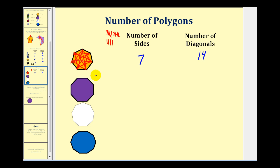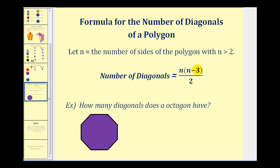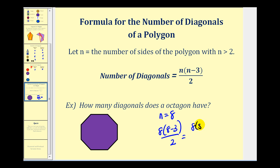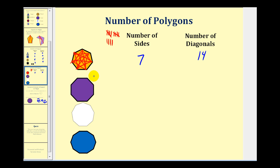It is a fairly challenging formula to develop from this pattern, but the formula is n times the quantity (n minus 3) divided by 2, where n is the number of sides. For an octagon with eight sides, n equals 8, so the number of diagonals is 8 times (8 minus 3) divided by 2, which is 8 times 5 equals 40, divided by 2 — that's twenty diagonals. You may want to try sketching all twenty diagonals for the octagon.